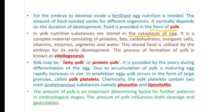Due to accumulation of yolk, a maturing egg rapidly increases in size. In amphibian eggs, yolk occurs in the form of large granules called yolk platelets. Chemically, the yolk platelets contain two main proteinaceous substances, namely phosphatin and lipovitellin. The amount of yolk is an important determining factor for further patterns in embryological stages, as it influences both cleavage and gastrulation.